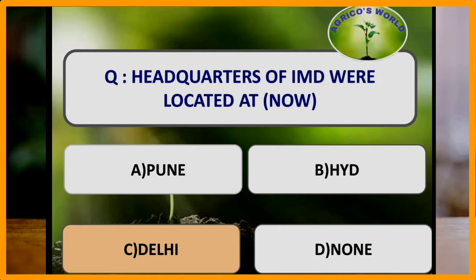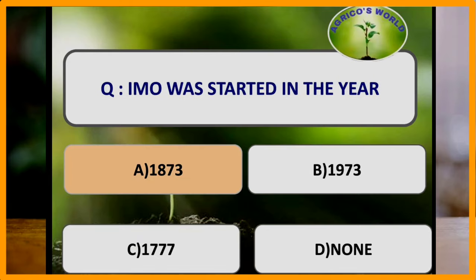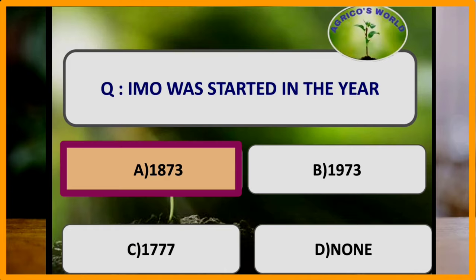Headquarters of Indian Meteorological Department is located at New Delhi at present. Earlier it was located at Pune. International Meteorological Organization was started in the year 1873 and it is located at Switzerland.